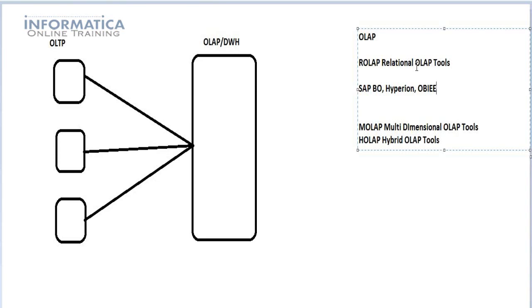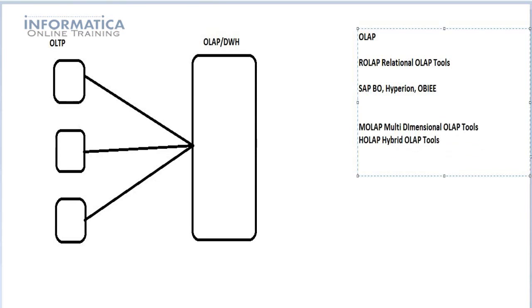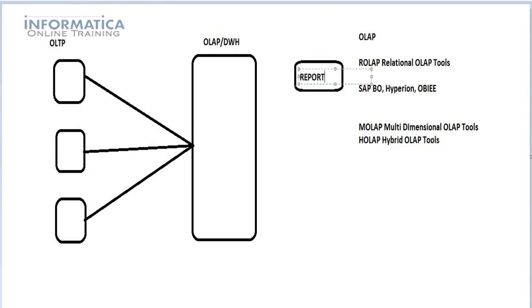When you hit a report, it reads the data instantaneously from the data warehouse or the OLAP database. Whenever the business user hits on the report, a SELECT statement is fired on this database. When you create a report, a SELECT statement is fired on this OLAP database and it selects the data instantaneously.